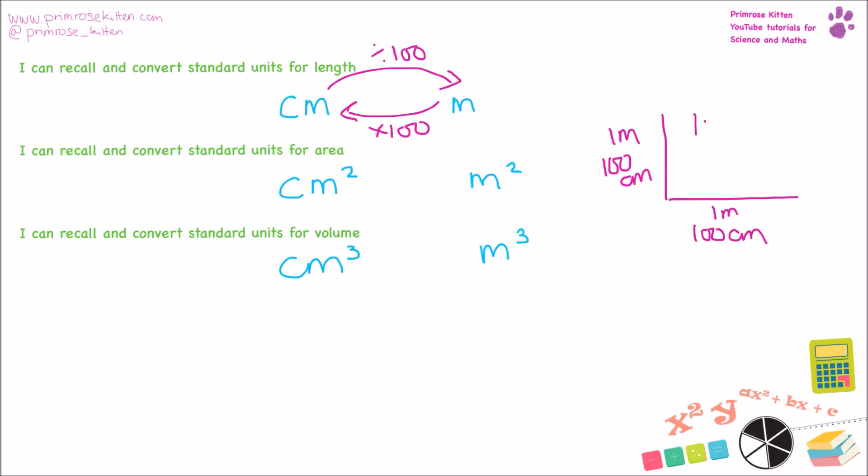So one meter squared is not the same as thinking about going from centimeters to meters. Because we have a hundred times a hundred, which is 10,000 centimeters squared. So to go from centimeters squared into meters squared, we need to divide by 10,000. Meter squared into centimeters squared is times by 10,000. And we can think about cubed in the same way.